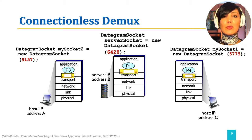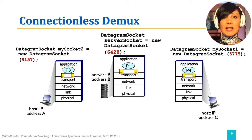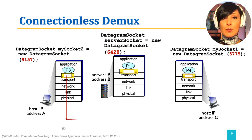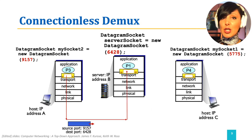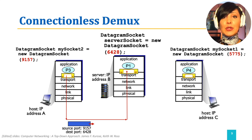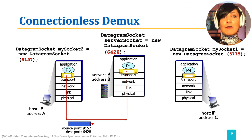When the application running on process P3 of host A sends a segment to the application running on process P1 of host B, the segment has source port 9157 and destination port 6428. After arrival of the datagram on the host with IP address B, the destination port number 6428 will be used to deliver the segment to application process P1.